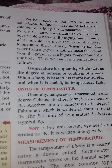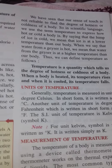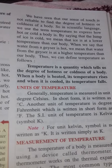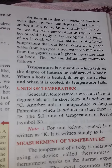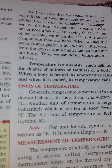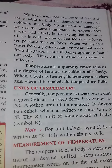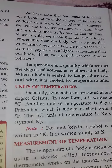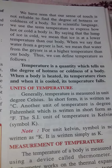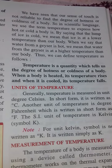By saying that a lump of ice is cold, we mean that ice is at a lower temperature. When we say a body is cold, we mean its temperature is low. And when we say it is hot, we mean the temperature is high. Temperature is a quantity which tells us the degree of hotness or coldness of a body. When a body is heated, its temperature rises. And when it is cooled, the temperature falls.